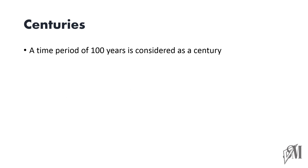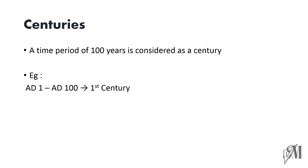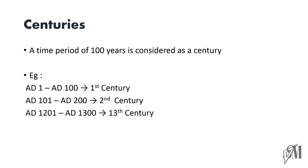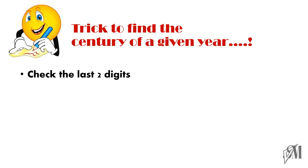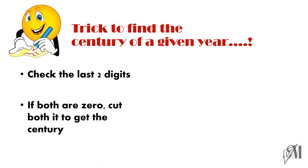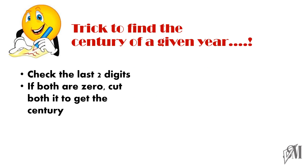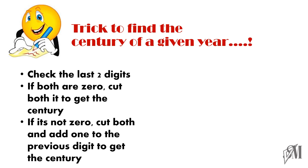Now let us look at a century. A time period of 100 years is considered as a century. From AD 1 to AD 100 is the first century, AD 101 to 200 is the second century, AD 1201 to 1300 is the 13th century, and now we are in the 21st century. Just like finding the decade, centuries can also be found using an easy trick.